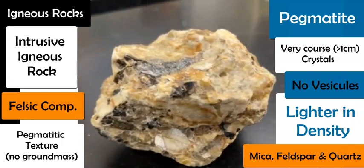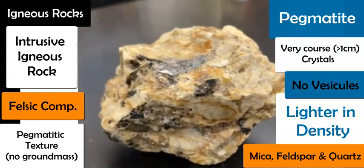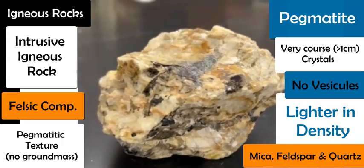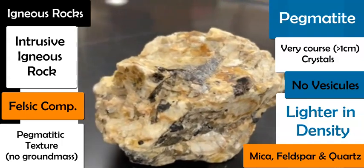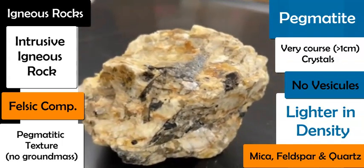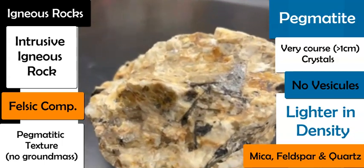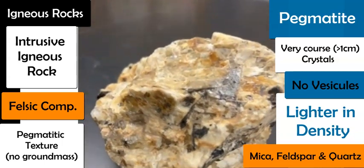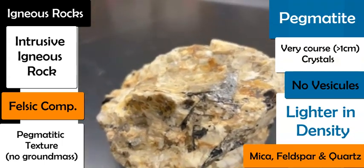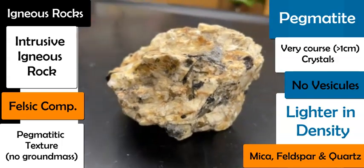These crystals can grow as large as one meter, and they are interlocking crystals formed deeper down in the lower mantle where there is more time to develop and grow. These crystals interlock, and they come out as a felsic composition — lighter in color, lighter in density, and with this very striking texture.